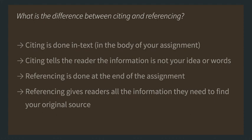So what is the difference between citing and referencing? Citing is done in the body of your essay or assignment — it's done in-text, which is why we call it in-text citation. Citing tells the reader that the information you've included is not your own idea or words; it's a little flag saying, 'I have found this information from an expert.' Referencing, on the other hand, is done at the end of the assignment on a separate page, and gives readers all the information they need to find your original source.